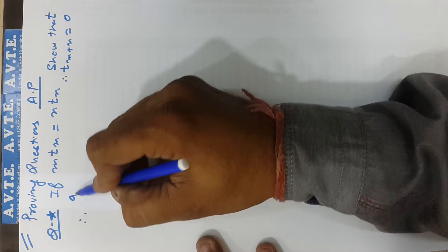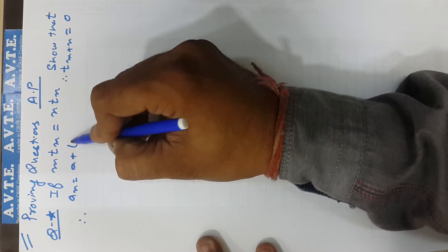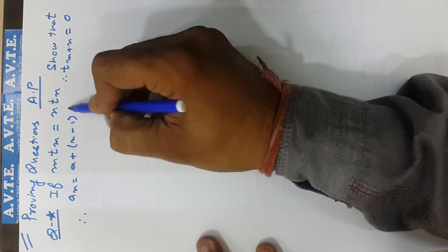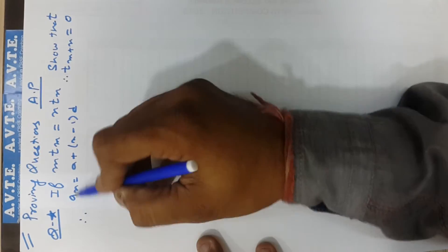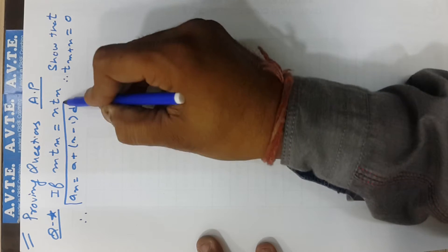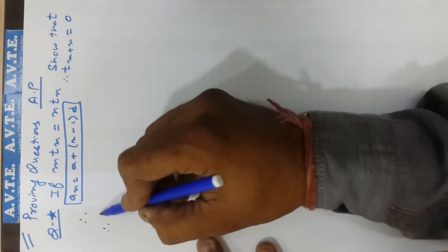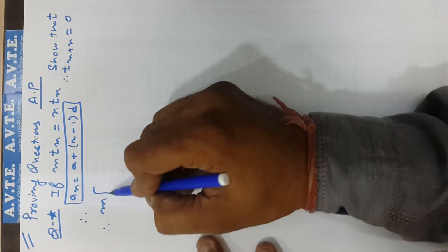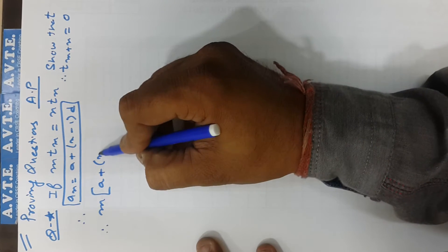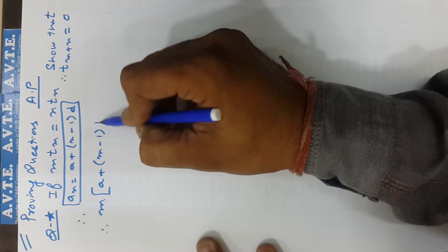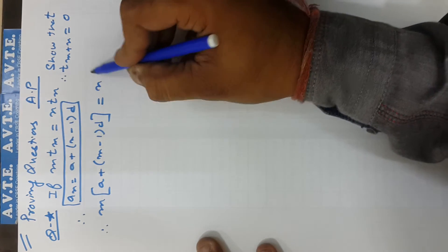The general term is a plus (n minus 1)d — this is the formula for the general term. So we write m times the m-th term equal to n times the n-th term.